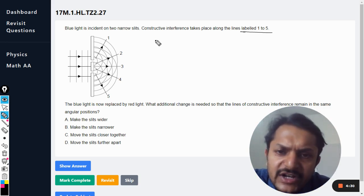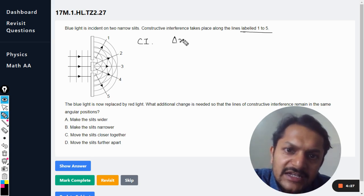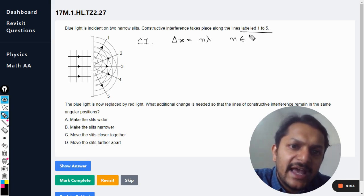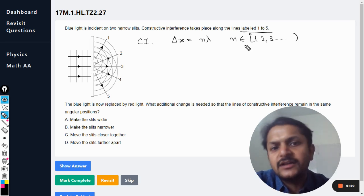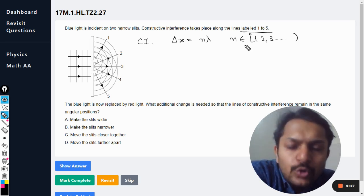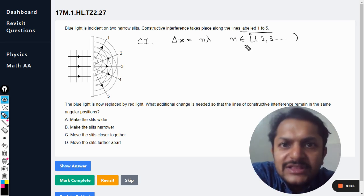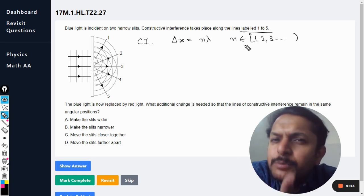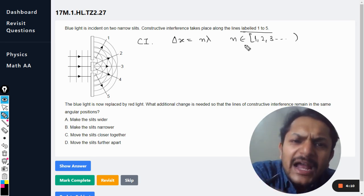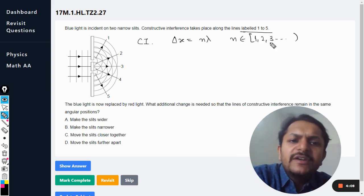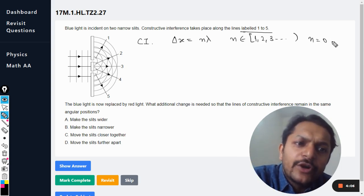So my students, as per the constructive interference is concerned, we already know that delta x is given by n lambda, where n is any integer. So I call it like the n starts from one. I do not consider n is equal to zero in this list, but you may or may not, because that is known as the central maxima. That is why I don't consider here, otherwise you can still say that yes, it is valid for n is equal to zero also.